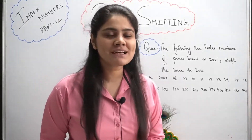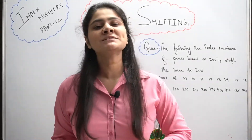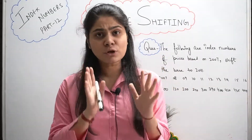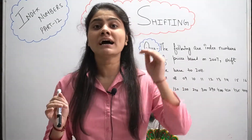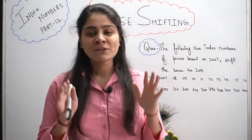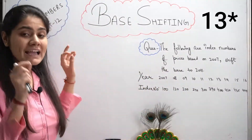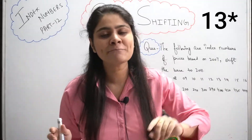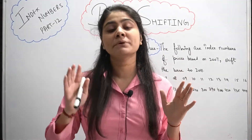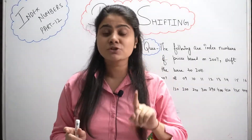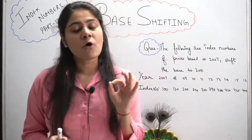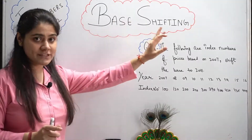Hi everyone, this is Bhateen. Welcome to my channel Dream Maths. We have started a super easy chapter that is index numbers. No doubt it is lengthy, but it is very easy if you have all the parts in serial order. Today's part number 12. I hope you have seen parts 1 to 11 — the link is in the description box. Today's topic is very easy: base shifting. Let's start.